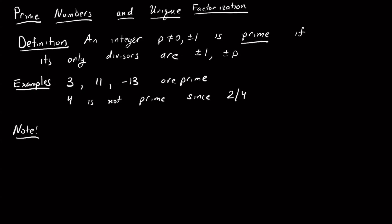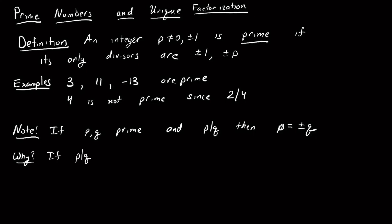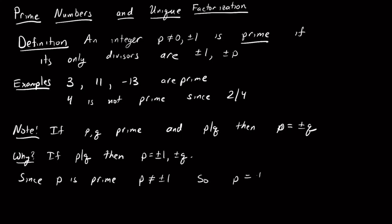A useful fact: if p and q are both prime and p divides q, then p must equal ±q. This is because the only divisors of q are ±1 and ±q, and since p is prime, p is not equal to ±1, so it must be the case that p equals ±q.